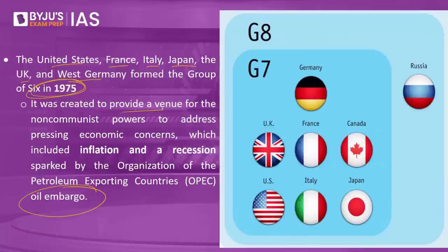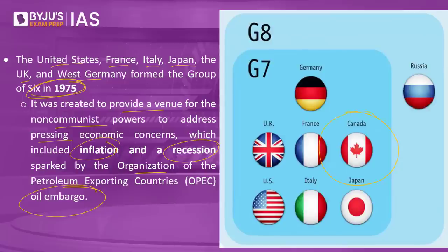The grouping was created to provide a venue for the non-communist powers to address pressing economic concerns, which included inflation and recession sparked by the Organization of Petroleum Exporting Countries. Because there was recession and economic issues hurting all these countries, six countries came together and initially formed the G6. Over a period of time, this G6 went on to become G7 with the inclusion of Canada in 1976, and they started having annual summits as well.